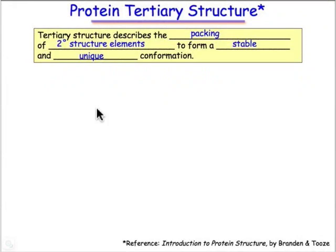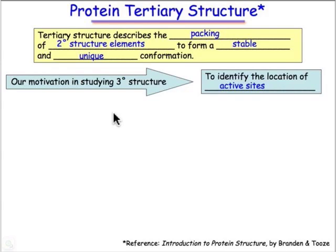So really what we're talking about is tertiary structure. It's the packing of beta sheets and alpha helices, and that folding process produces a unique conformation — these globular compact particles — and they're stable in aqueous solution. What we're really interested in in this class is to try to understand and be able to look at a structure, examine it, and try to determine where the active site would be for, say, an enzyme or a receptor.